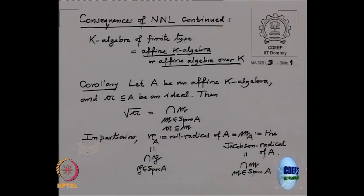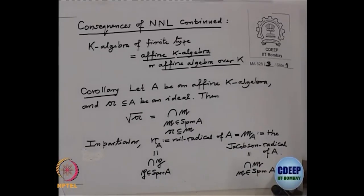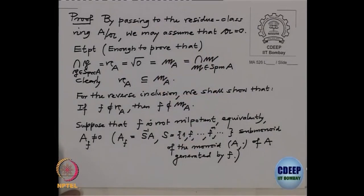One containment is always clear: the nil radical is contained in the Jacobson radical. However, the other inclusion may not hold in general — for example in Z mod p, the nil radical could be strictly smaller than the Jacobson radical. So the assumption that we have an affine algebra is very important.